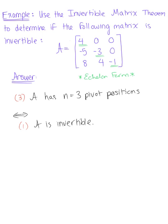So since matrix A here has 3 pivot positions, we know that our matrix is invertible. And that is our beautiful final answer.